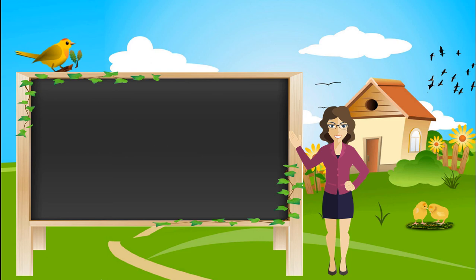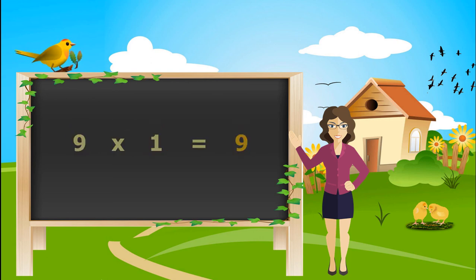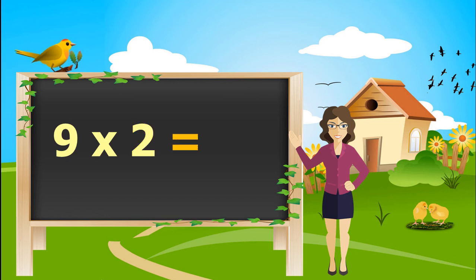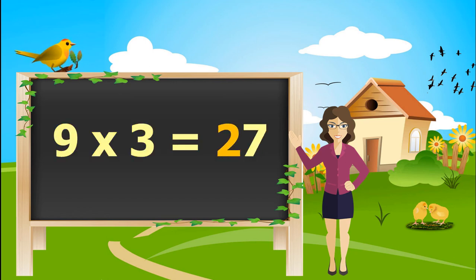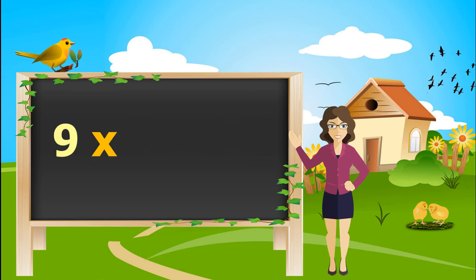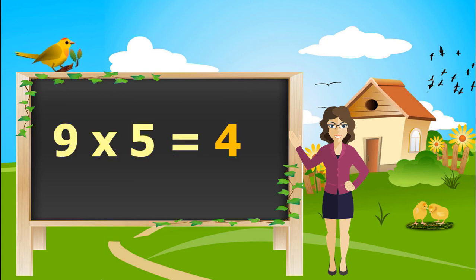9 ones is 9. 9 twos are 18. 9 threes are 27. 9 fours are 36. 9 fives are 45.